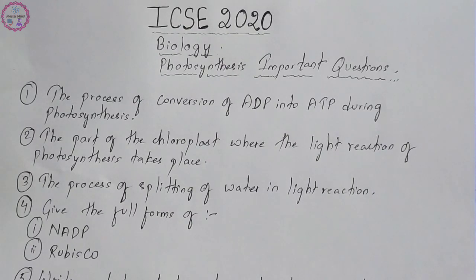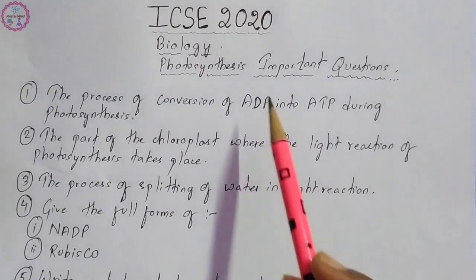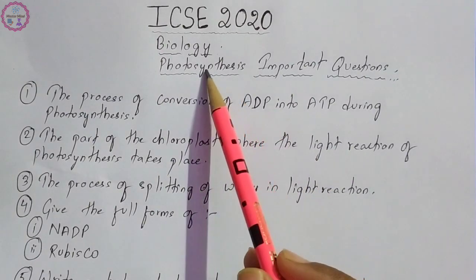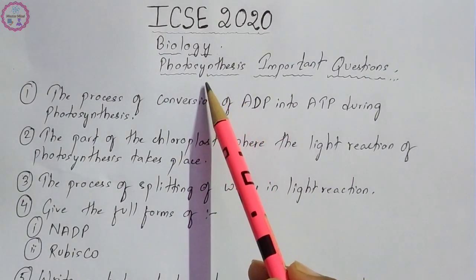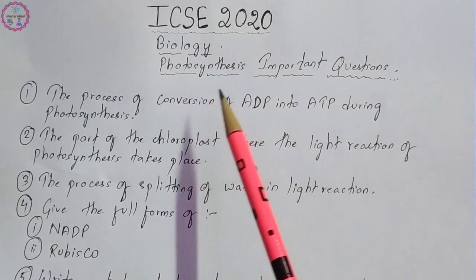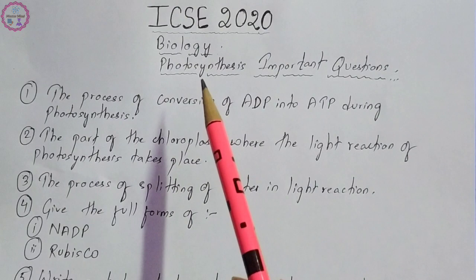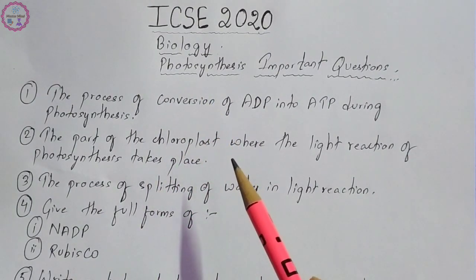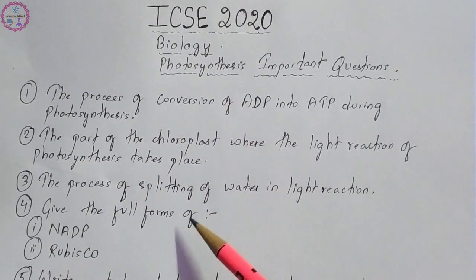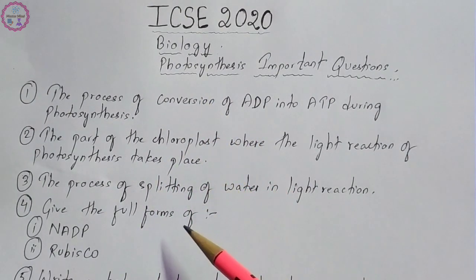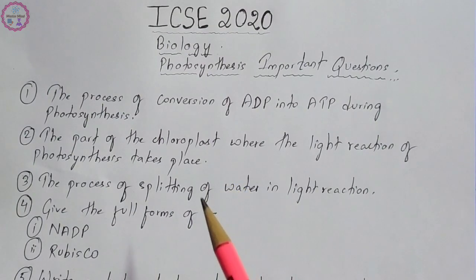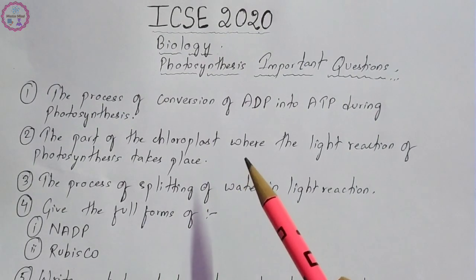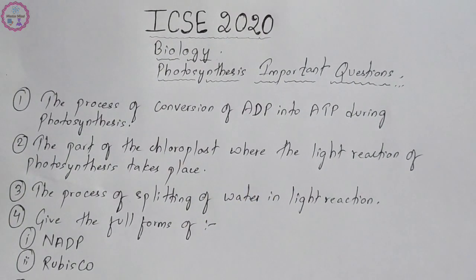Hi guys, this is Barsha and you are watching Mastermind. In this session we are going to discuss important questions from biology from the chapter photosynthesis. Do watch this video till the end — all these questions are important for your ICSE 2020 board examination. These are the type of questions which are mostly repeated in your board examinations. So let us begin.